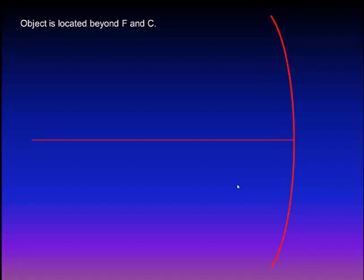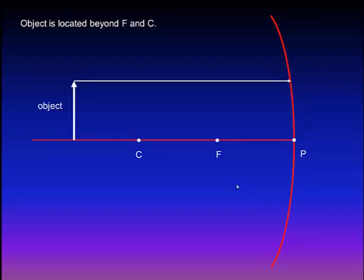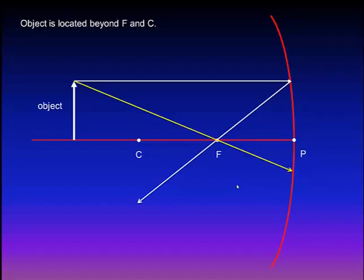If we have a concave mirror and this is the principal axis, which passes through its center of curvature and its pole, and the object is after C — to draw the image, we have to draw two light rays. The first light ray will be parallel to the principal axis and will reflect passing through the focus. The second ray will pass through the focus and will be reflected parallel to the principal axis. The intersection point between the two reflected rays will be the position of the image.